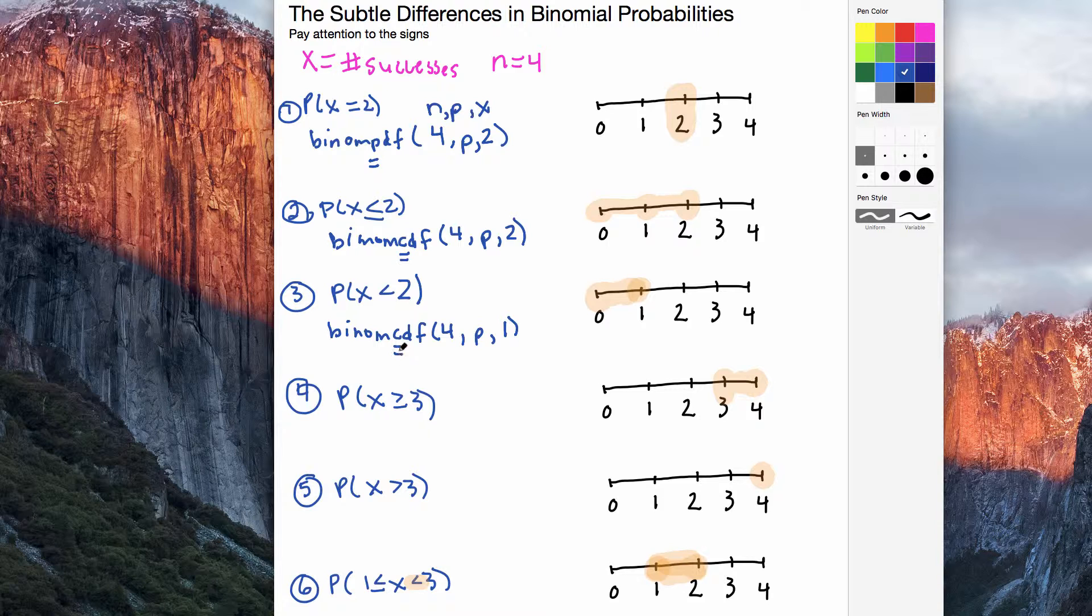Then, the probability of x greater than or equal to 3. Our number line says add up the probability of 3 successes and 4 successes. So I could literally say, find the probability that x equals 3, add it to the probability that x equals 4, and I would get an answer. And that would be absolutely correct.